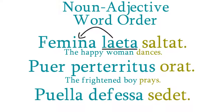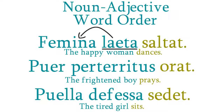As a final example, this sentence means, 'The tired girl sits.' Again, in Latin, the noun appears before the adjective that modifies it. Literally: the girl tired sits.